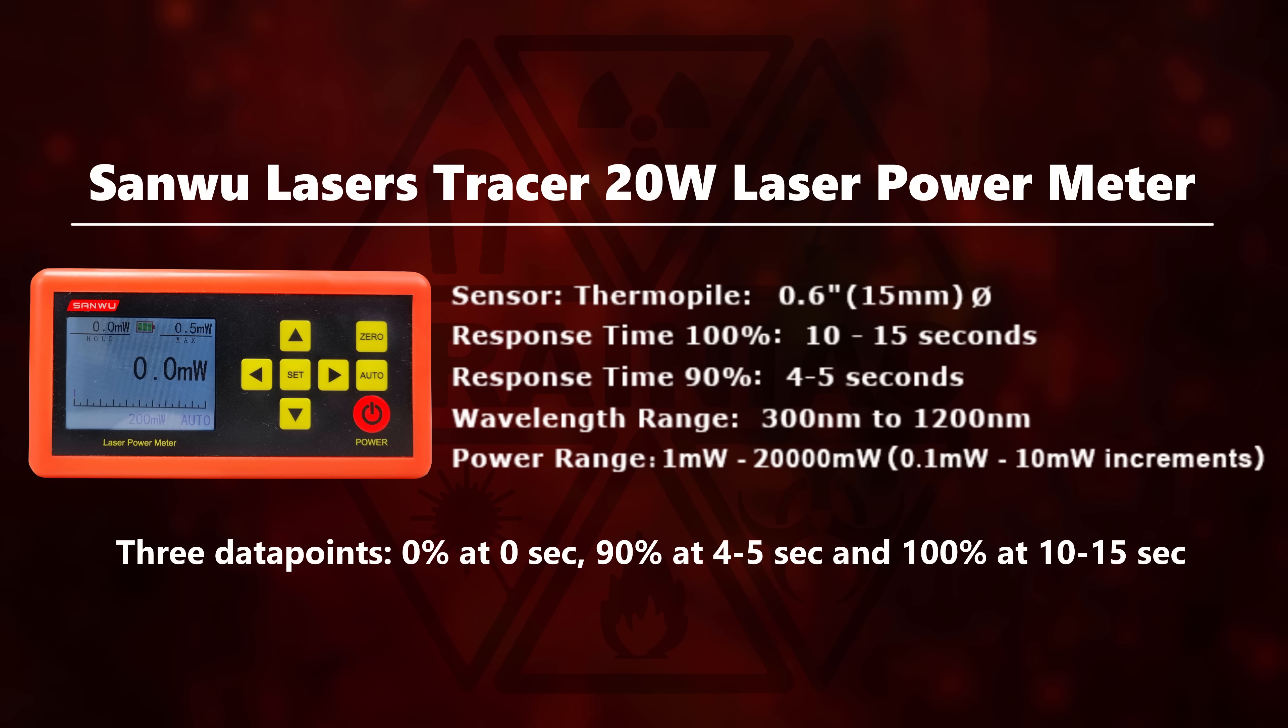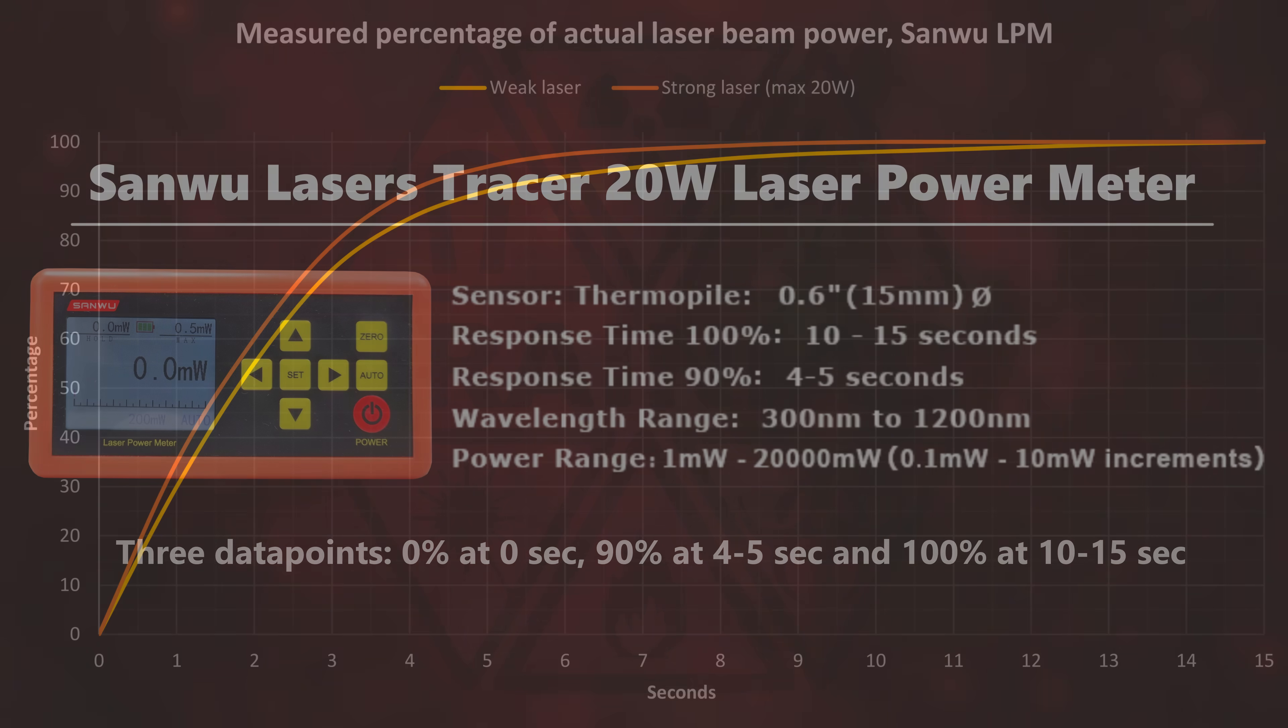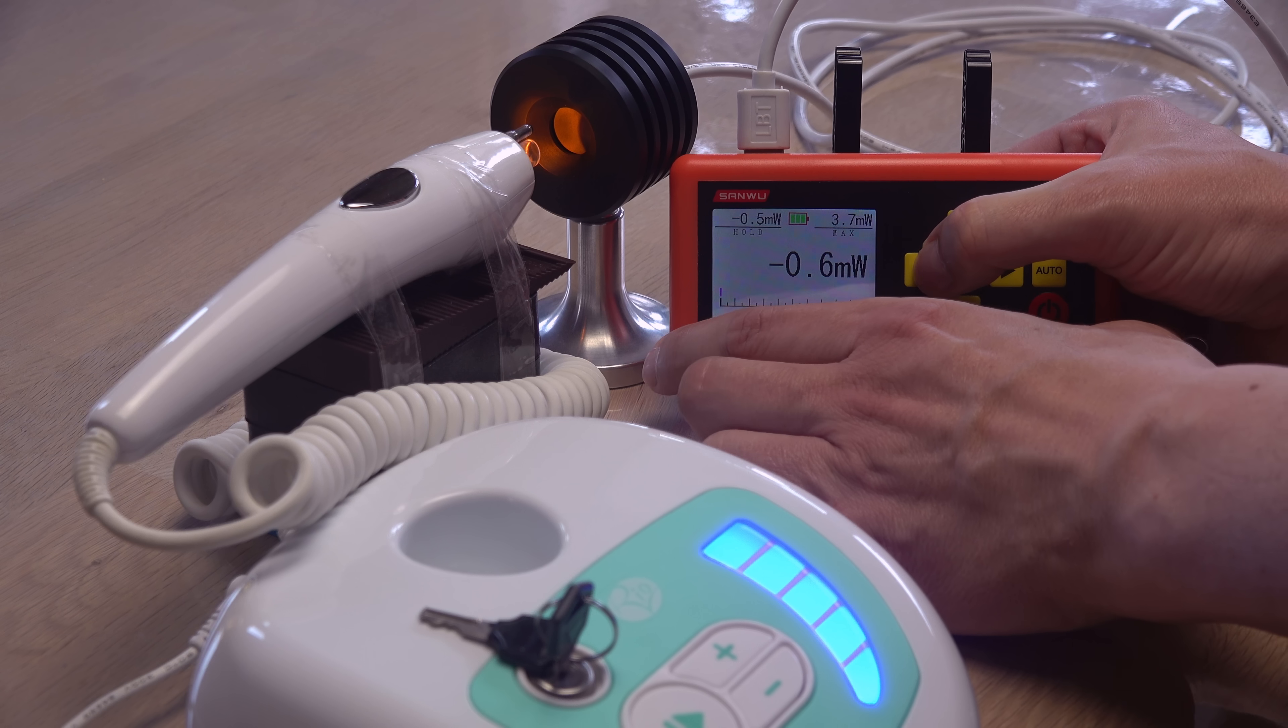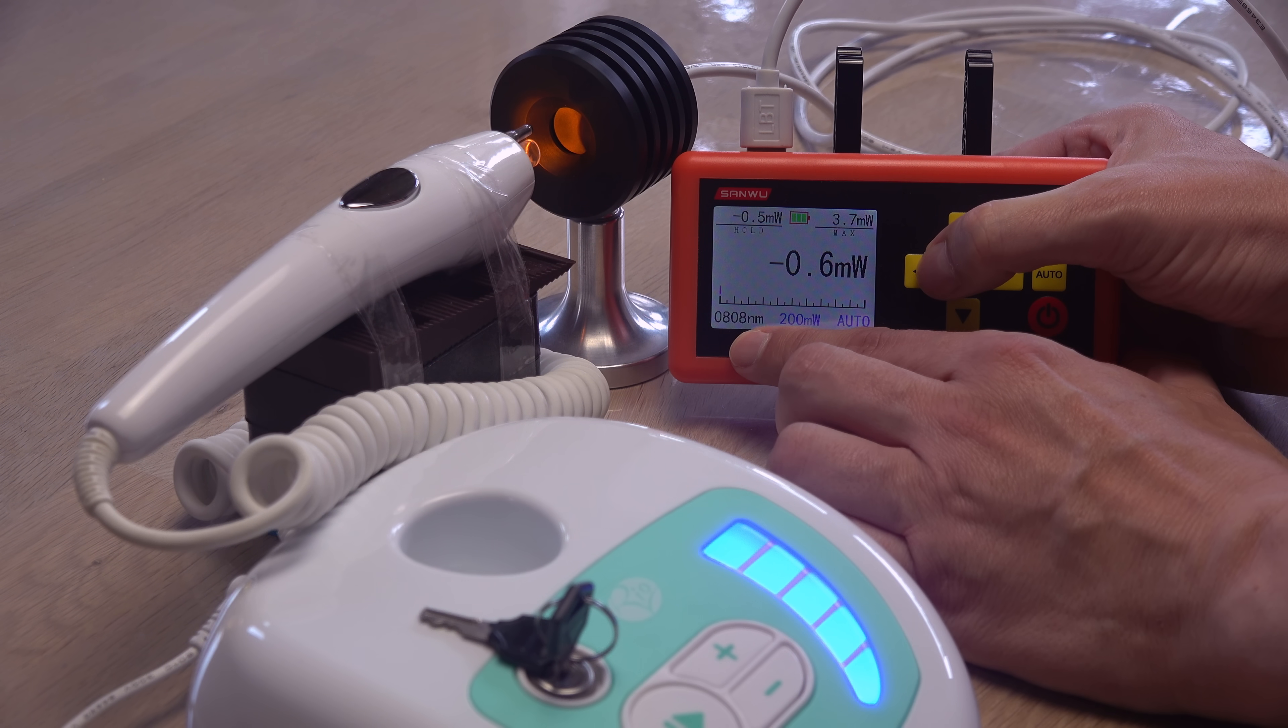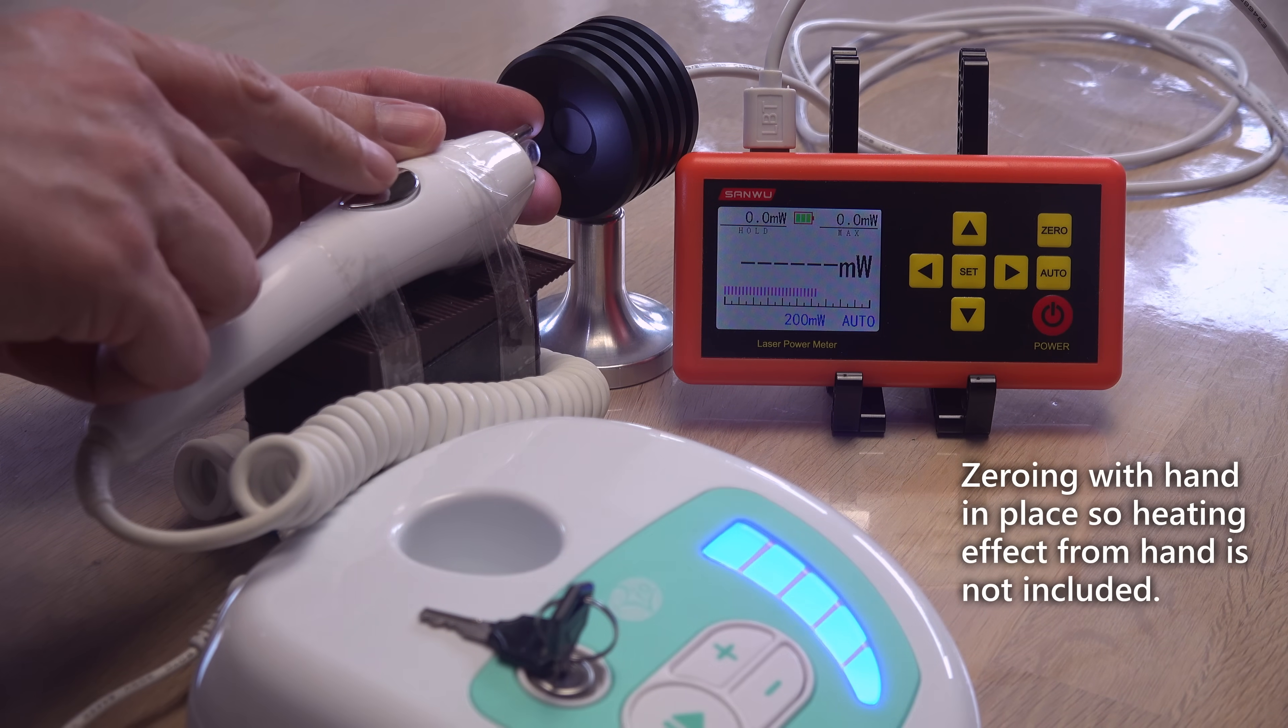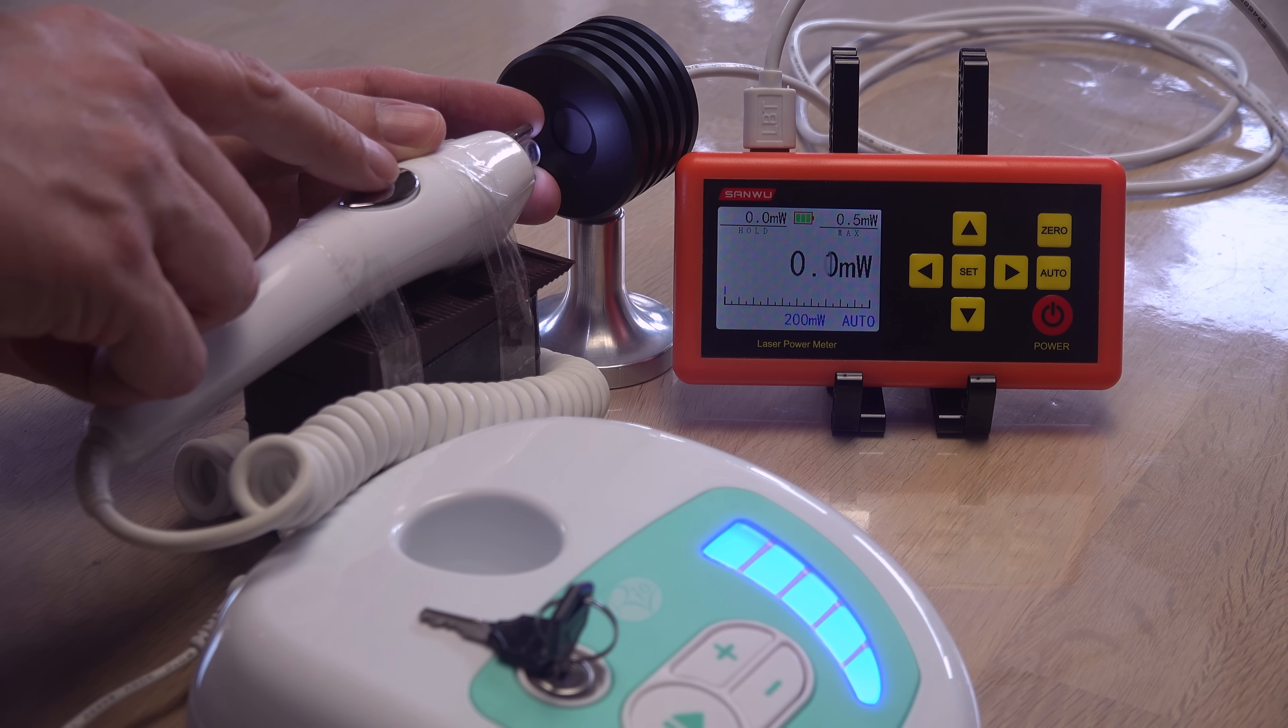Based on the three known data points, I have guesstimated these curves for my laser power meter. After only 3.5 seconds, it should reach around 80 to 85% of the laser beam's actual power. Good. With the LPM calibrated to 808 nanometers close enough, I will start right at the laser's highest power setting. Level 5 of 5. Here we go.